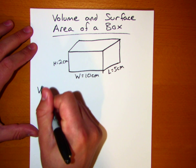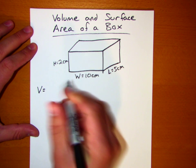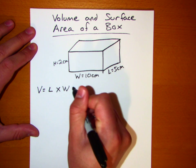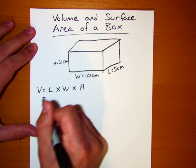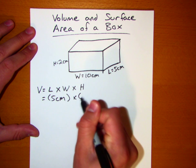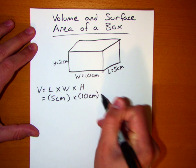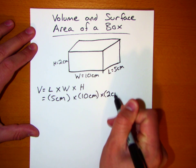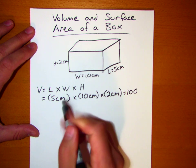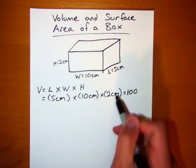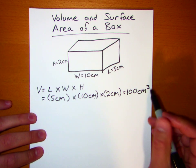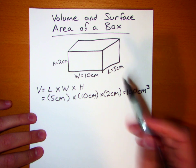The volume of the box — that's the easier calculation of the two — is just going to be equal to the length times the width times the height. That's 5 centimeters times 10 centimeters times 2 centimeters, which equals 100 cubic centimeters. We know it's cubic because we're talking about a volume.